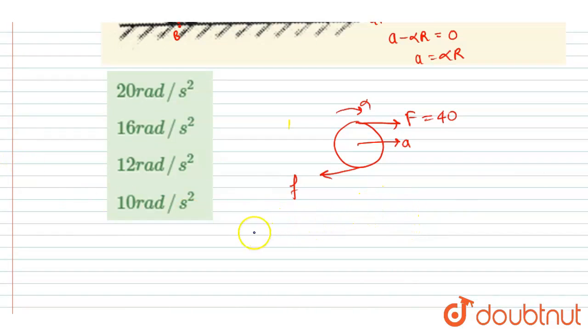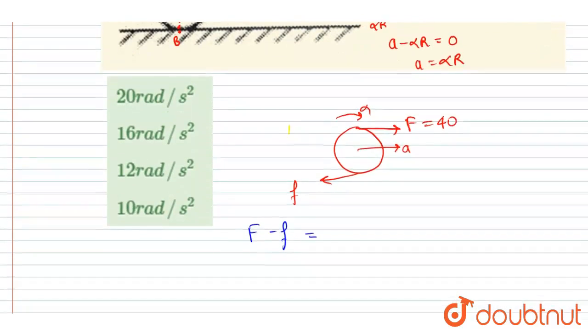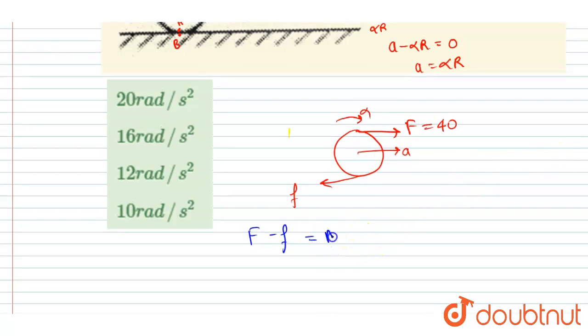So if I write the torque equation and force equation, first of all let's write the force equation. I will write F minus small f is equals to mass times acceleration. So if you see in the question, 5 kg mass is given.